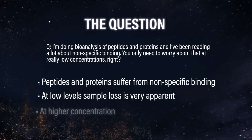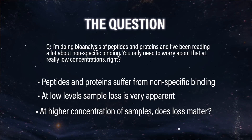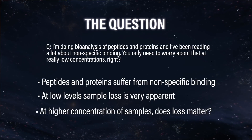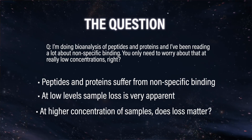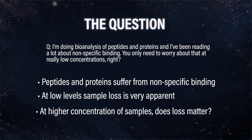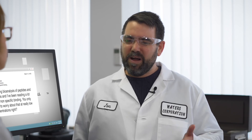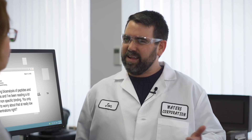At higher concentrations of sample, even if you lose a little bit, does it matter? I've read in some papers where people try to get around this by either injecting large concentrations of a different protein, or maybe using some sort of a surfactant — though probably not PEG, because that gets all fouled up in your MS. Some sort of surfactant to try to minimize these types of interactions.